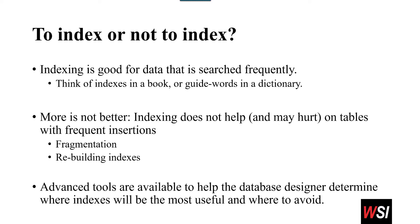Fragmentation basically means you have a lot of pages within the index — you can think of a page as a page in a dictionary. You'll basically have a lot of pages that are half-filled with words. It's very much like fragmenting of a hard drive, where you have data that's not contiguous. So if you're constantly adding and deleting, you're going to be constantly rebuilding that index to relieve the fragmentation, and that could actually slow down performance. So we don't recommend just putting indexes everywhere.